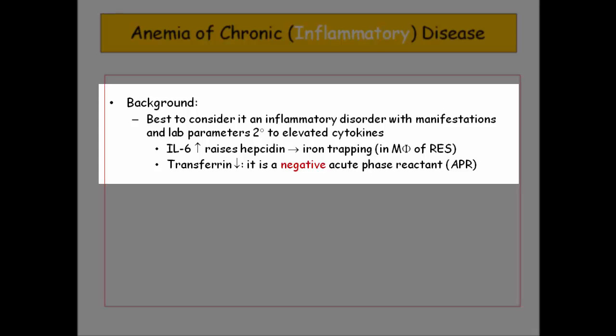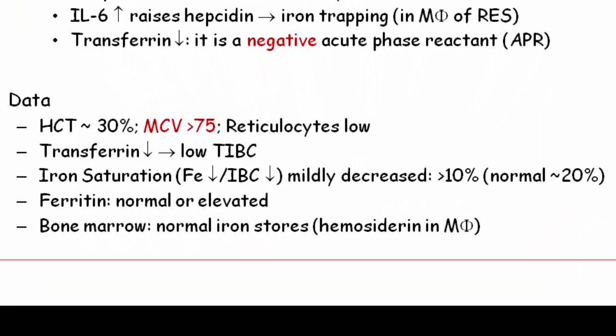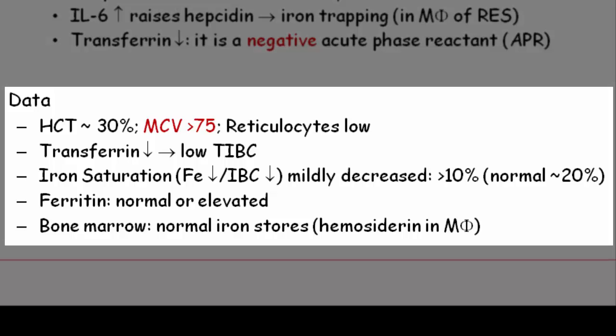IL-6 causes a rise in hepcidin. Hepcidin degrades ferroportin, so iron is trapped in the cell — including the enterocyte and the bone marrow macrophage — and is not available to the erythroblast. You have anemia. The transferrin level decreases; it is a negative acute phase reactant that goes down in inflammation. These patients generally have mild anemia. The MCV is reduced, but only mildly, and there is no reticulocytosis. The low transferrin means low total iron binding capacity — there are fewer trolleys running. Iron saturation is low-normal.